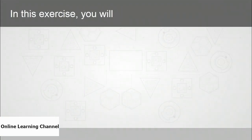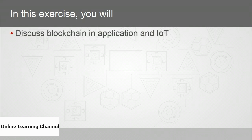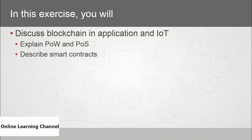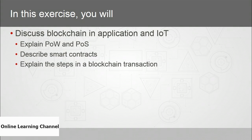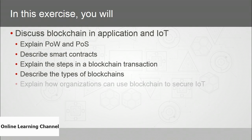Now that you've learned about blockchain in application and as it pertains to IoT, it's time to put some of that knowledge to work. In this exercise, you'll explain proof-of-work and proof-of-stake, describe smart contracts, explain the steps in a blockchain transaction, describe the types of blockchains, and explain how organizations can use blockchain to secure IoT.